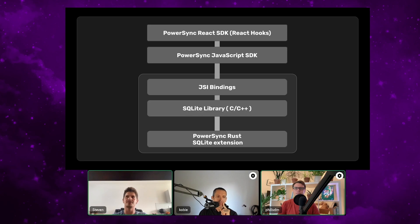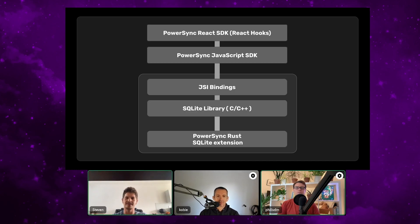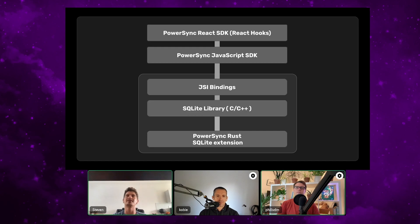In order to interface JavaScript with our SQLite functionality — which actually stores the database on the phone — we decided to go with JSI bindings, which interface with a C implementation of SQLite directly linked to our PowerSync Rust SQLite extension. That extension does most of the functionality for ensuring that syncing operations are done between the device and the server. We built it from the lower level up, getting the most complicated native implementations sorted out first.